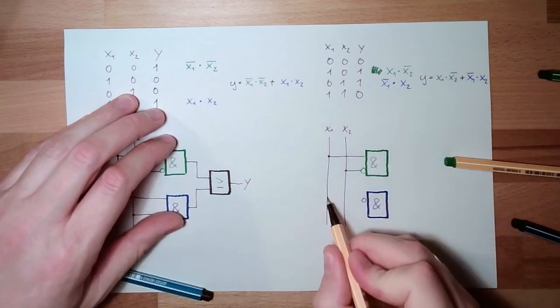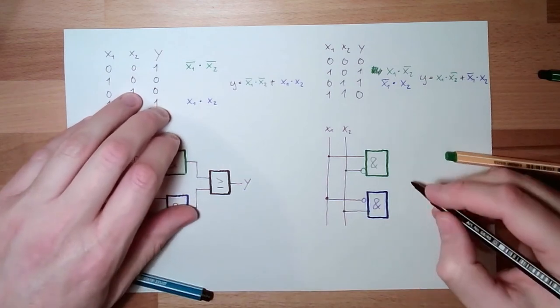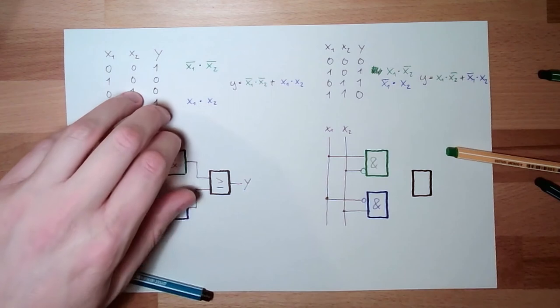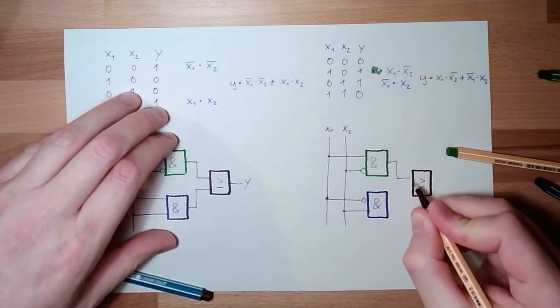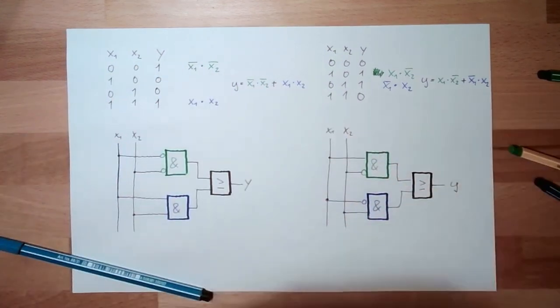And this is NOT X1 and X2. And these two are OR together. OR. And this is Y. This is Y.